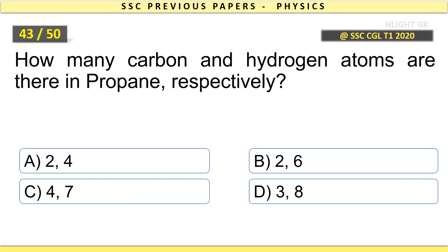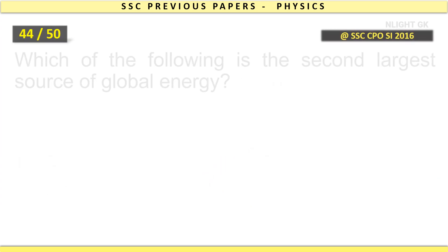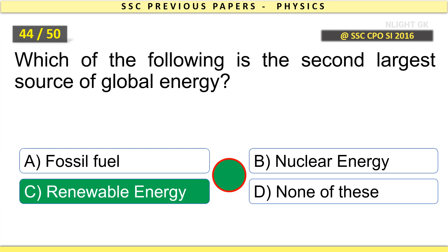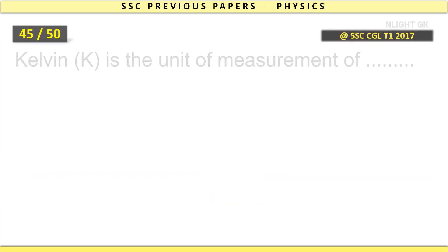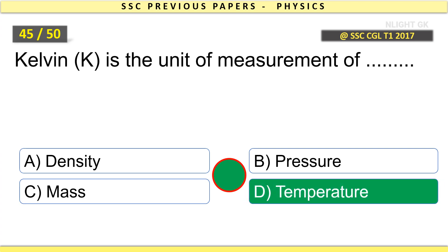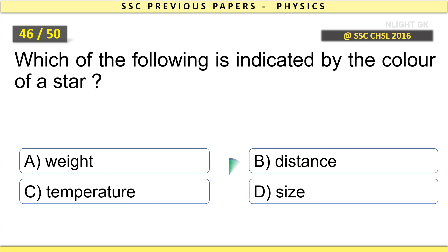Wooden bat can be classified as an opaque object. Rise of oil on wick is due to surface tension of the oil. How many carbon and hydrogen atoms are there in propane, respectively? 3 and 8. Which of the following is the second largest source of global energy? Renewable energy.